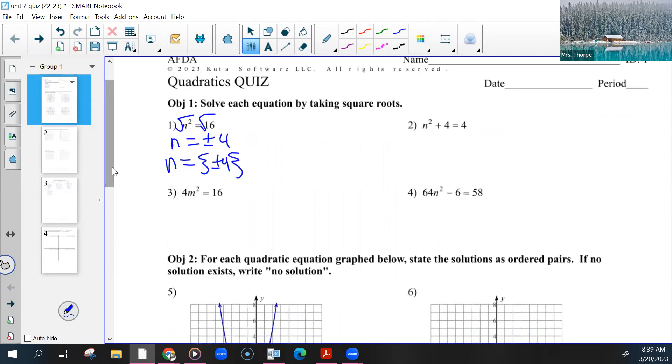Problem two: isolate the n squared, get rid of the four. Take the square root of both sides. Some of you got this, some of you did not. Some of you put plus or minus zero, which you didn't need to. There is no such thing. But some of you saw that it was zero and put no solution. That was not the answer. Zero could be an input.